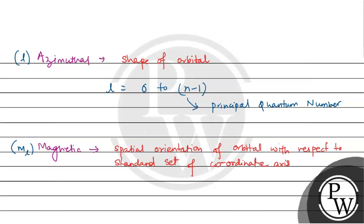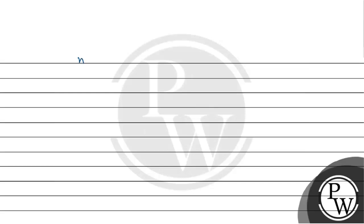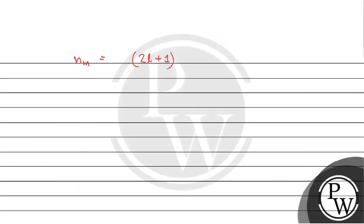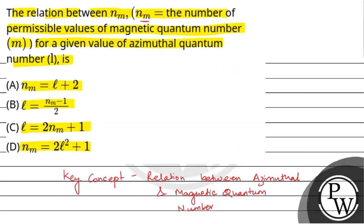The number of permissible values, nm, is equal to 2l plus 1. Moreover, we can rearrange this: nm = 2l + 1, so 2l = nm - 1, which gives l = (nm - 1) / 2.